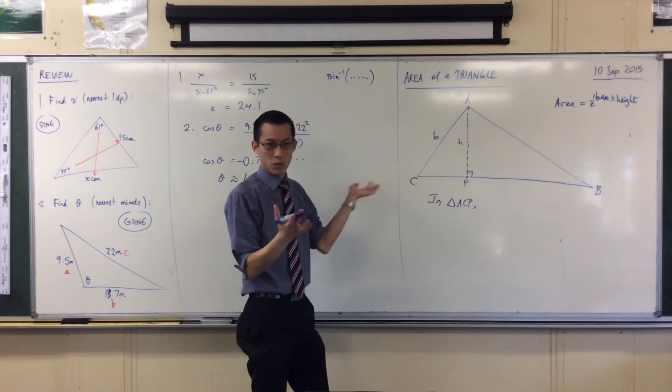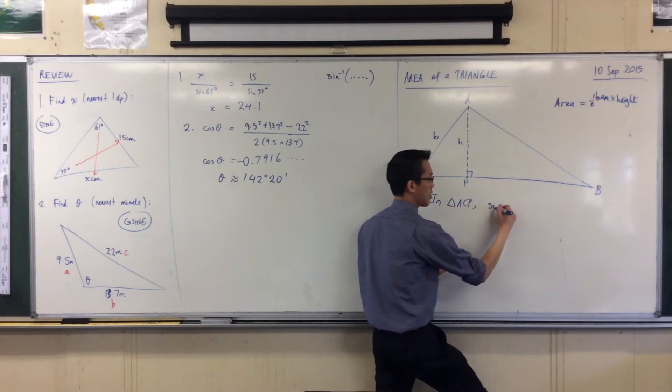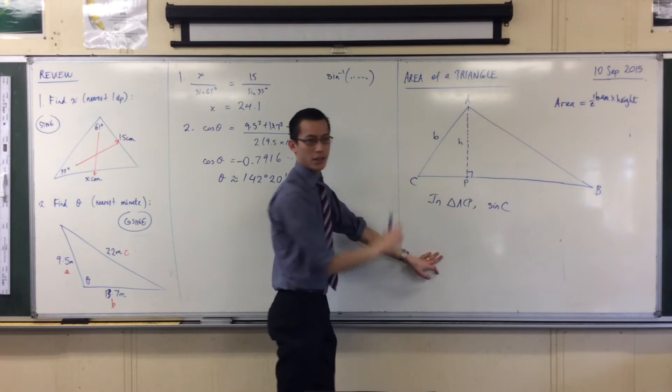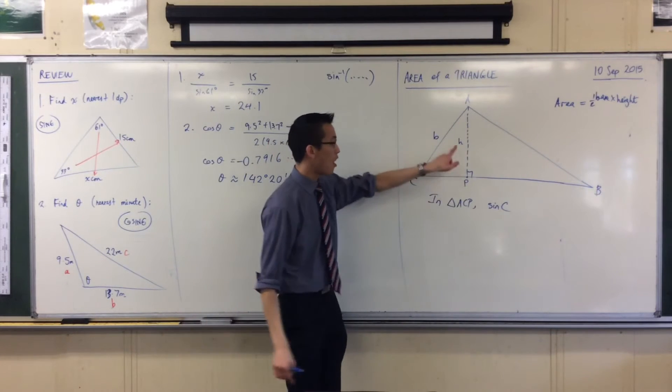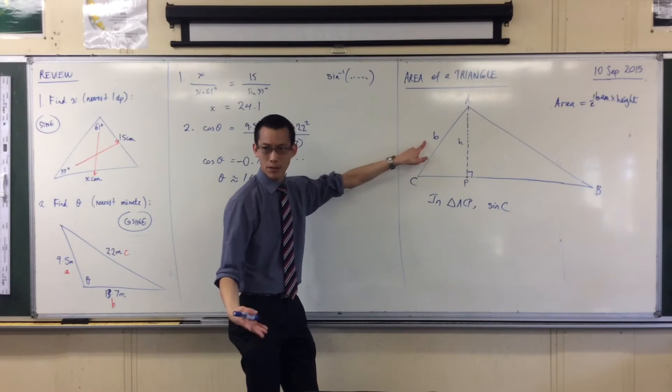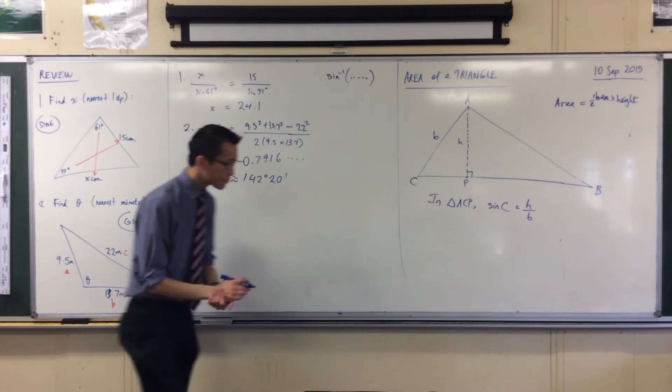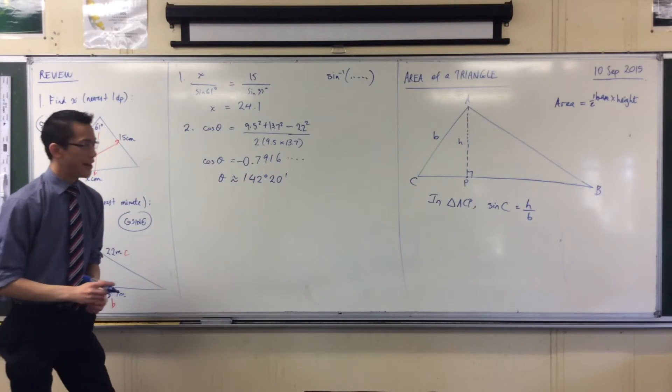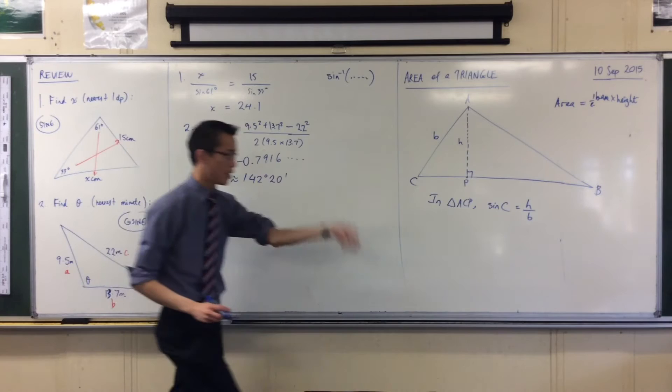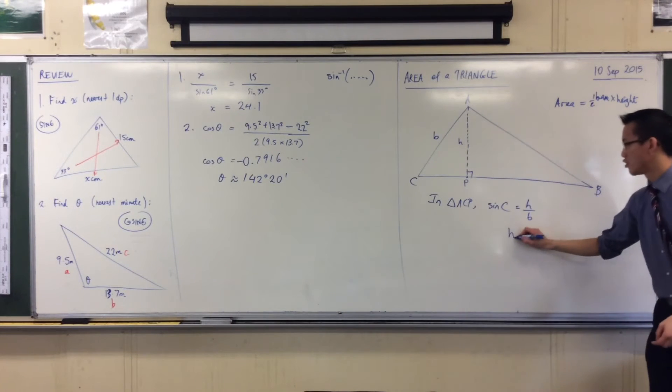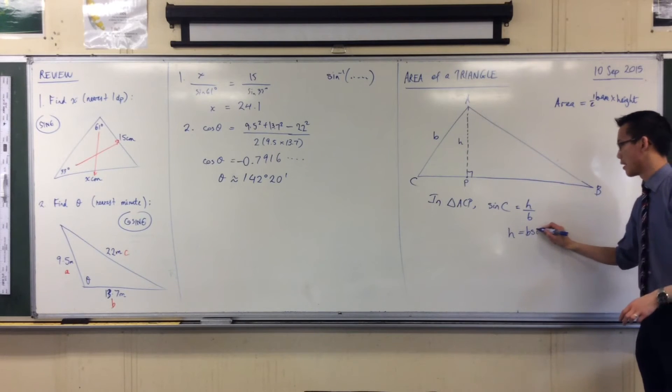So, I could say, for instance with sine, I could say sine of this angle over here in the left-hand corner should be opposite on hypotenuse. You agree with that? Opposite on hypotenuse. So, that's just H over B. And the reason why that's useful is because now I can make H the subject. It should be B sine C.